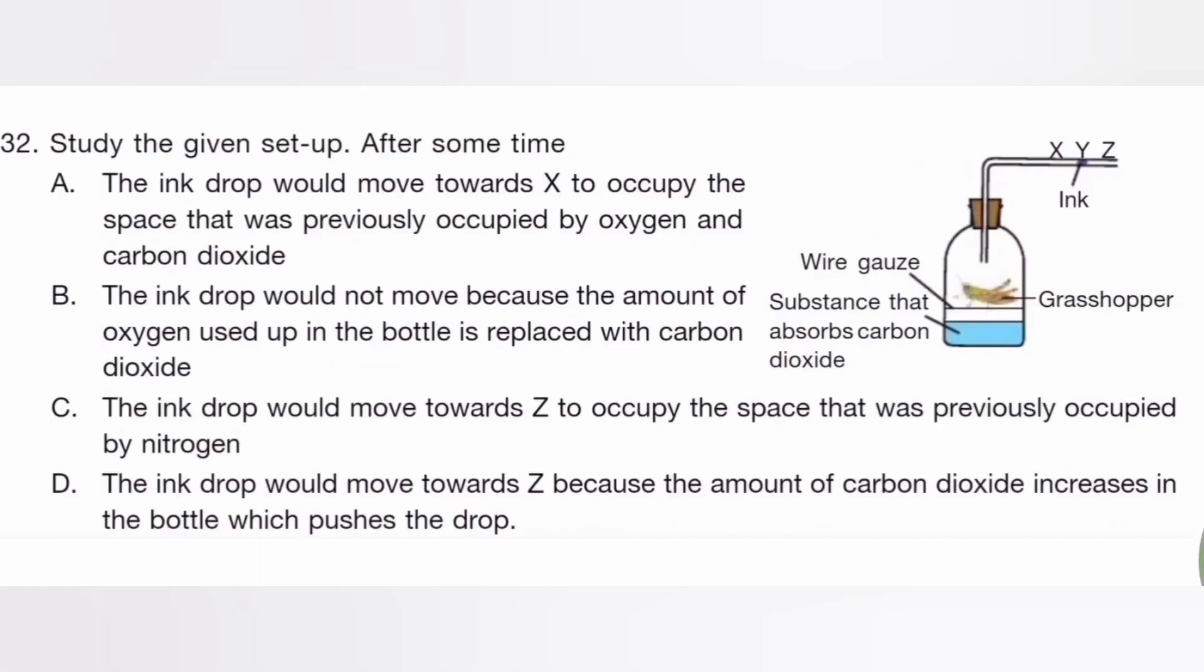Study the given setup. After some time, the answer is A. The ink drop would move toward X to occupy the space that was previously occupied by oxygen and carbon dioxide.